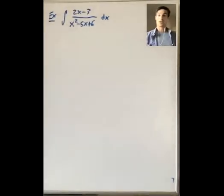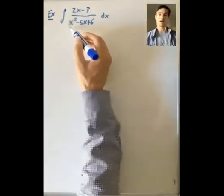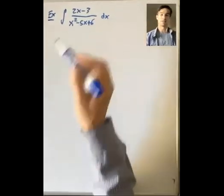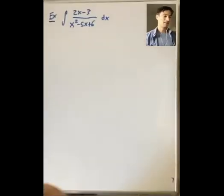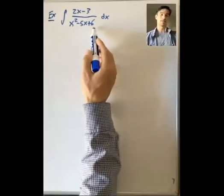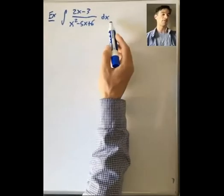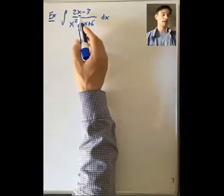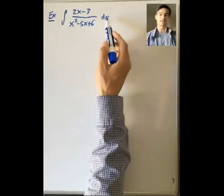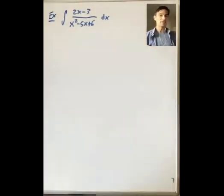For our next example, let's do the integral of 2x minus 3 over x squared minus 5x plus 6 dx. If you set u equal to the denominator, then du will be 2x minus 5 dx, and we have a 2x minus 3 dx. Those seem close, but this is not easy to do by u-substitution — I wouldn't know what to do from there.